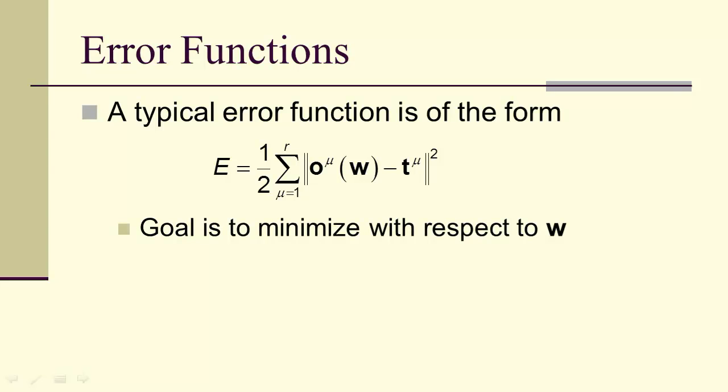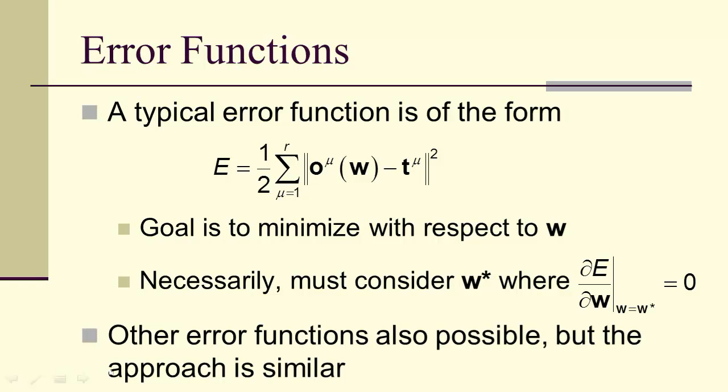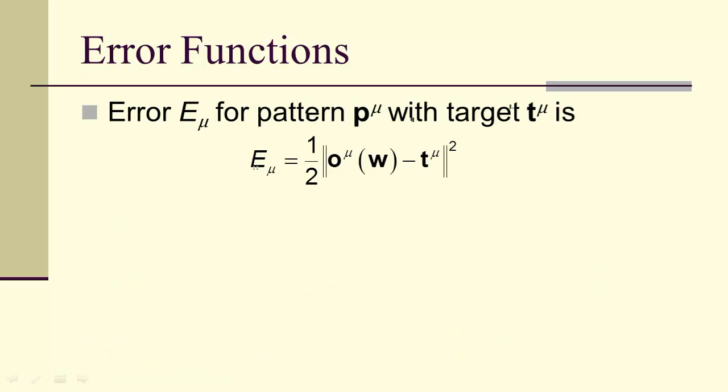Of course, we'd like to minimize with respect to W, which means setting the partial derivatives with respect to W equal to zero. So the W here are the synaptic weights, and the goal is to find the synaptic weights that give us the smallest value of E. So the error E sub mu for a pattern P upper sub mu with target T upper sub mu is given as you see here.